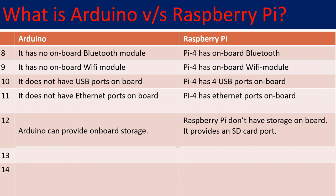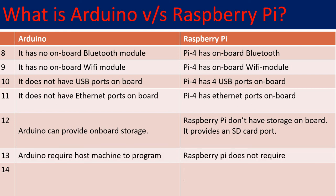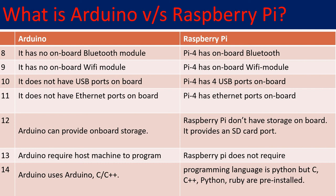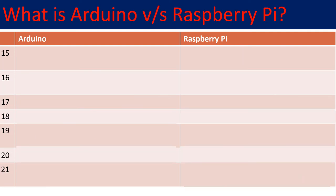Arduino doesn't require any additional SD card. Arduino requires a host machine to program it — you need a host machine with the Arduino IDE through which you program the board. Raspberry Pi doesn't require a host machine because it is a computer by itself; once you load the operating system you can program it directly. Arduino makes use of Arduino programming language, as well as C and C++, whereas Raspberry Pi can be programmed using Python, C, and C++.